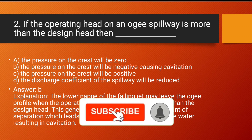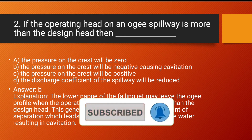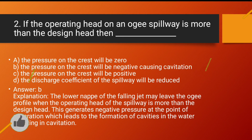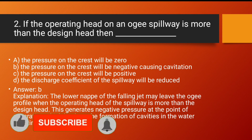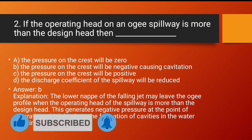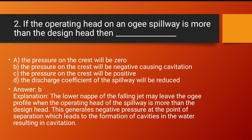Question number 2: If the operating head on an Ogee spillway is more than the design head, then — Option A: the pressure on the crest will be zero. Option B: the pressure on the crest will be negative, causing cavitation. Option C: the pressure on the crest will be positive. Option D: the discharge coefficient of the spillway will be reduced.